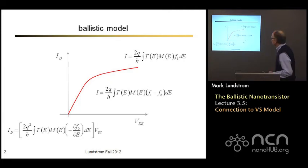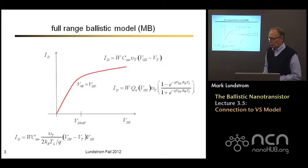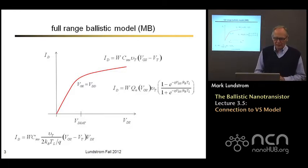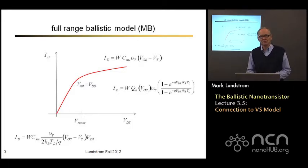By way of reminder, the ballistic model we get simply by applying our Landauer formalism at the top of the barrier. It simplifies to this expression for small drain to source voltage in the linear regime, and to this expression when F1 is much greater than F2 under on-current conditions. And the results are quite different, especially for the linear current than the traditional model.